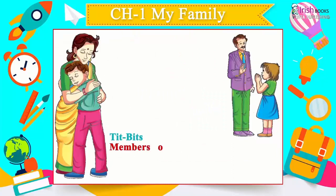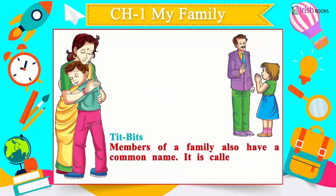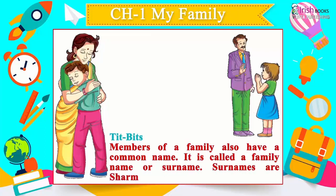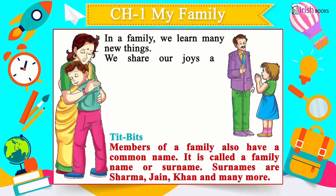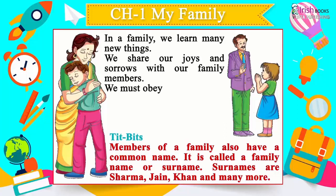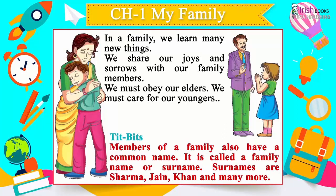Tidbits: Members of a family also have a common name, called a family name or surname. Surnames include Sharma, Jane, Khan and many more. In a family, we learn many new things. We share our joys and sorrows with our family members. We must obey our elders and care for the young ones.